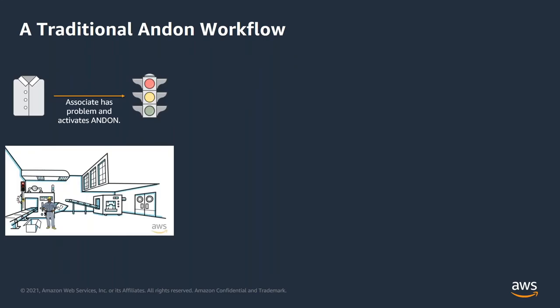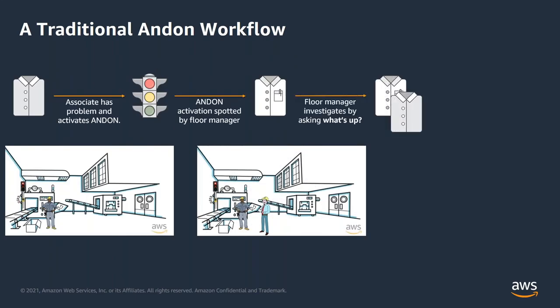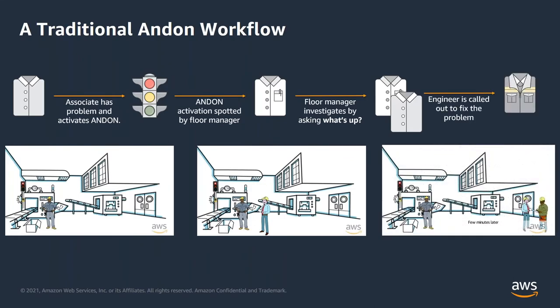Let's take a quick look at how a traditional Andon system operates. Imagine an assembly line, and an associate on the factory floor notices a problem with the assembly. The associate cannot let the defective assembly go down the line. The factory is huge, and there needs to be an alert on the floor to allow the floor manager to decide who could fix this issue. The associate pulls the Andon cord, which lights up the stack lights at his workstation. The floor manager then comes to the station, figures out the right specialist who could solve the issue, and calls for the specialist.